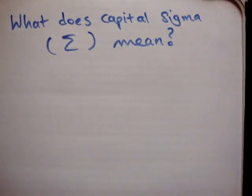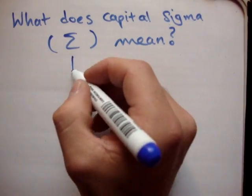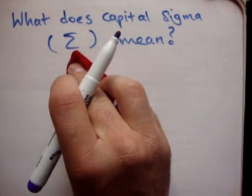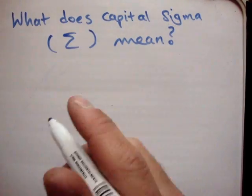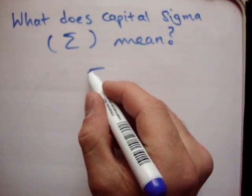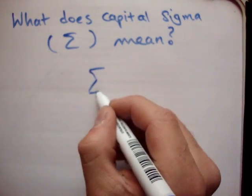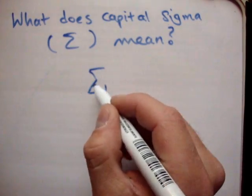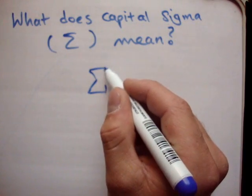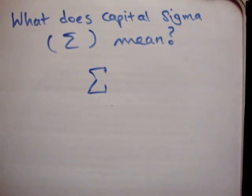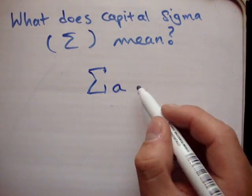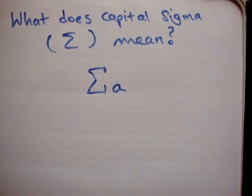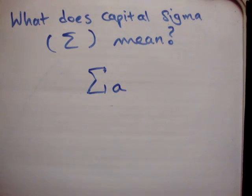So first of all, how do you draw capital sigma? Well, there it is. It's a capital letter, so clearly it's bigger than the lowercase version.